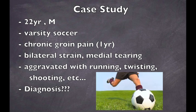A 22-year-old male soccer player for the UBC varsity team has been suffering with chronic groin pain for up to a year now. He has a strain in his groin when he plays on both sides and strain or tearing on the lower portion located more centrally on his abdomen. These symptoms are aggravated when he runs, twists, shoots, and he also has difficulty going from a seated position to a standing position. Try and diagnose him.